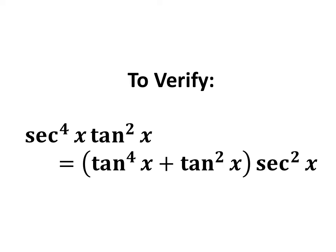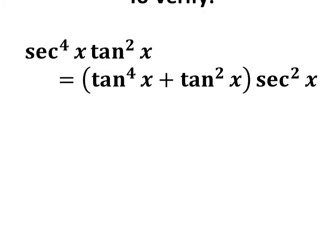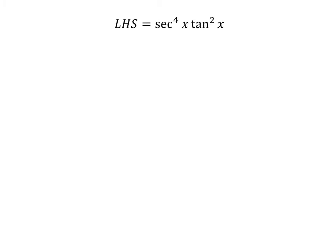In this video, we will learn to verify the trigonometry identity: secant of x raised to the power of 4 times square of tangent of x is equal to tangent of x raised to the power of 4 plus square of tangent of x times square of secant of x. Let us start from the left hand side of the identity, which is secant of x raised to the power of 4 times square of tangent of x.